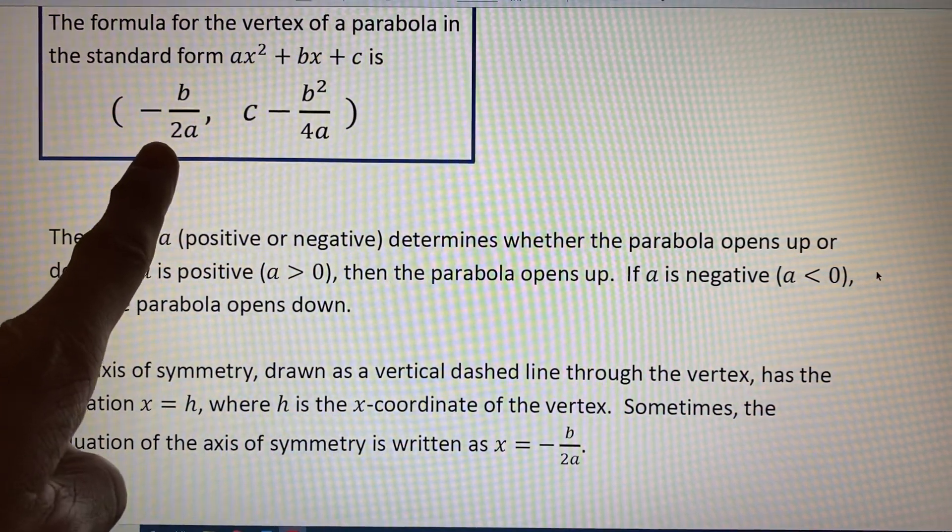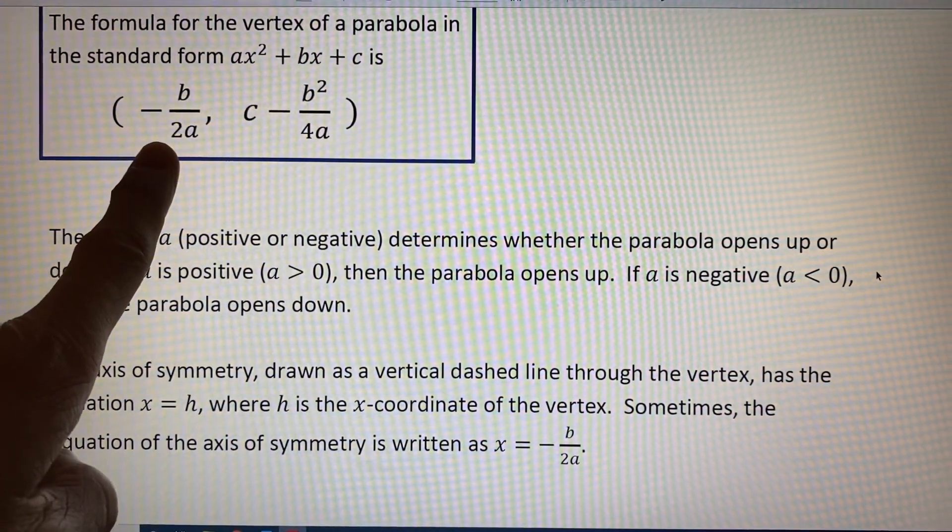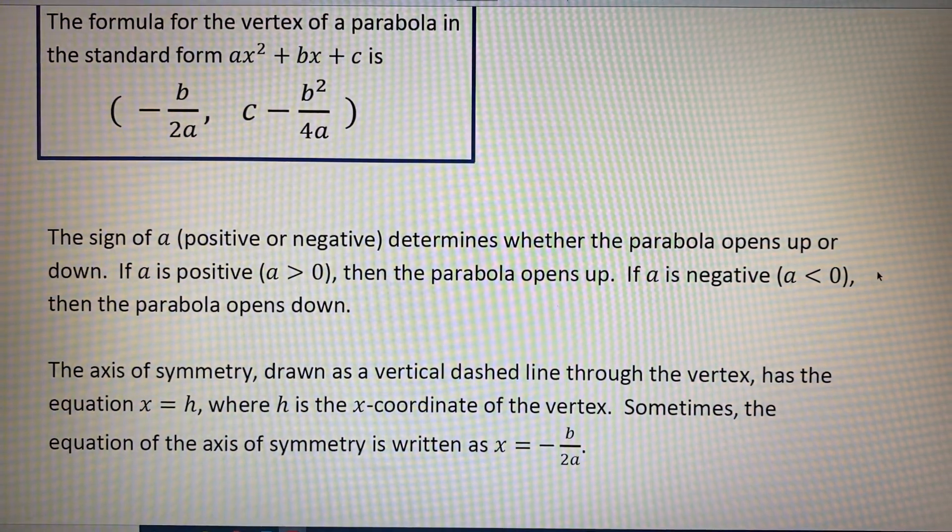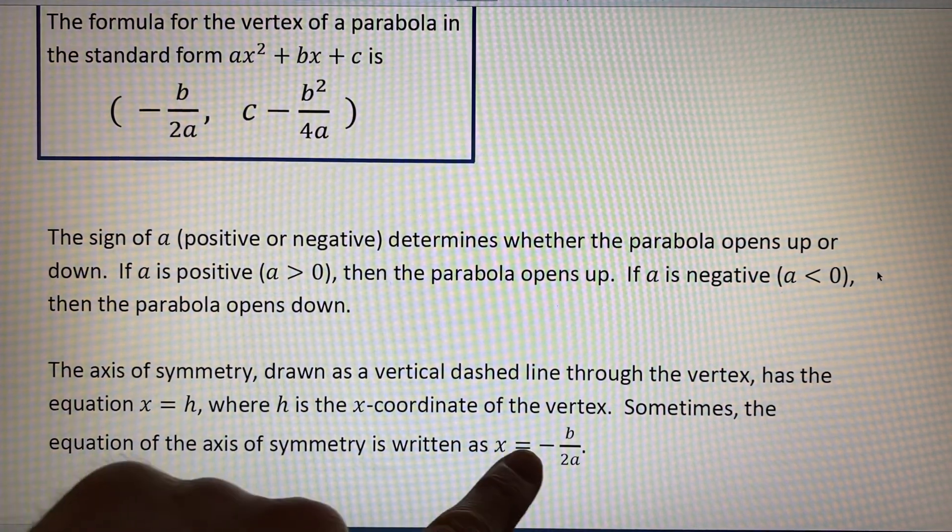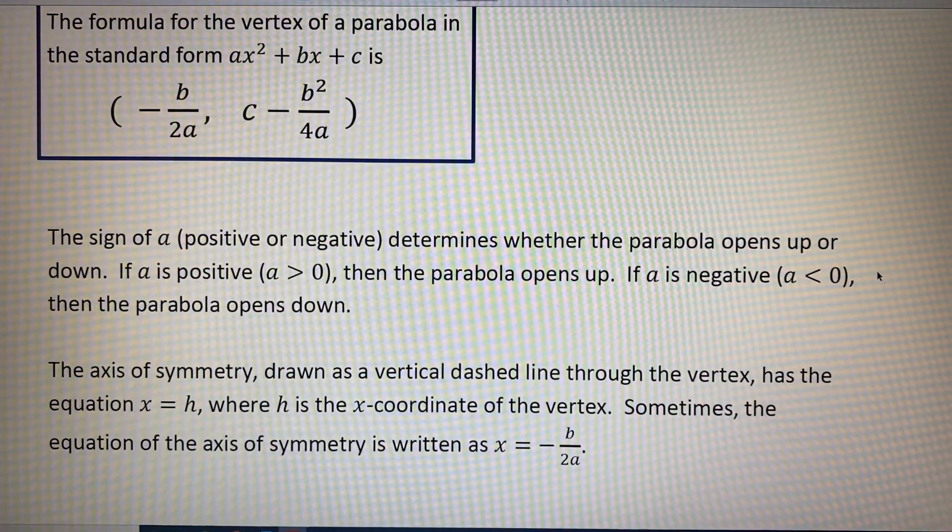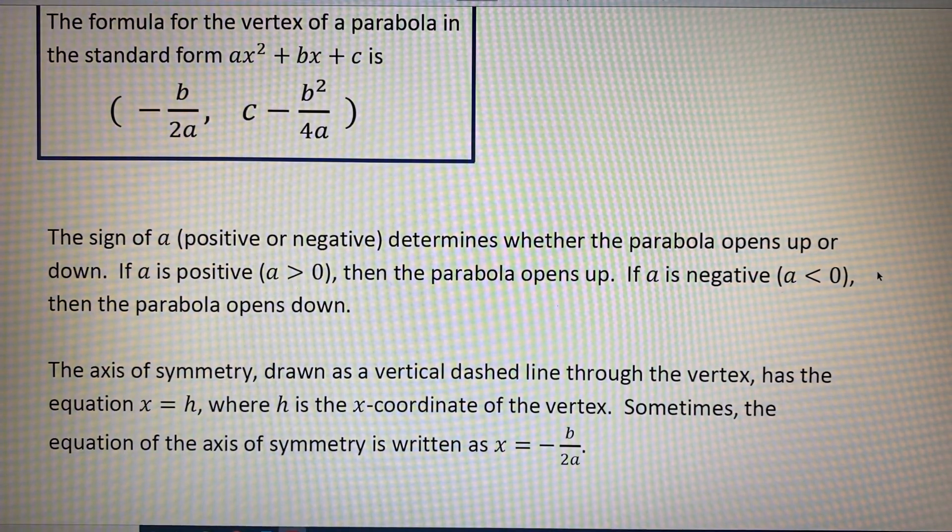In other words, h is equal to opposite b over 2a. Sometimes the equation of the axis of symmetry is written as x equals opposite b over 2a.